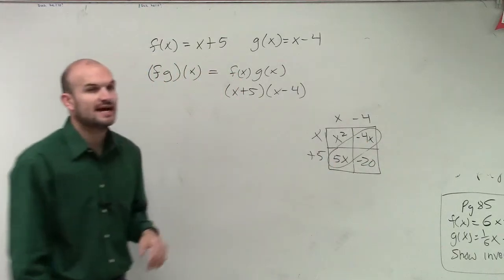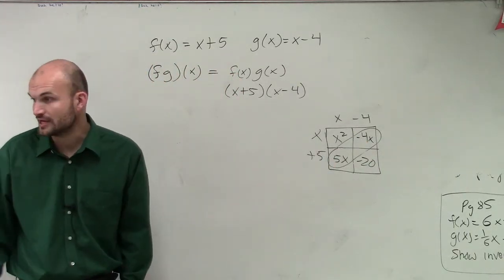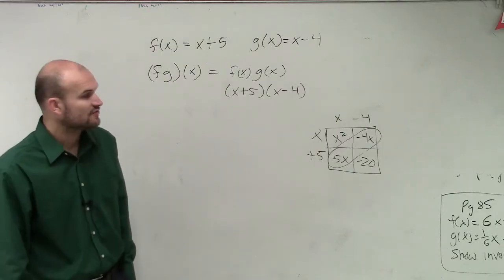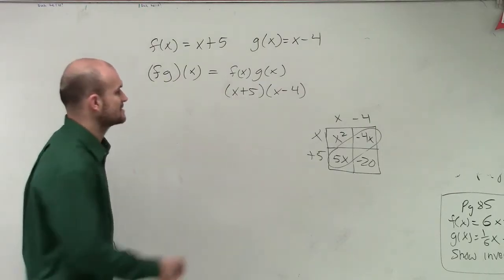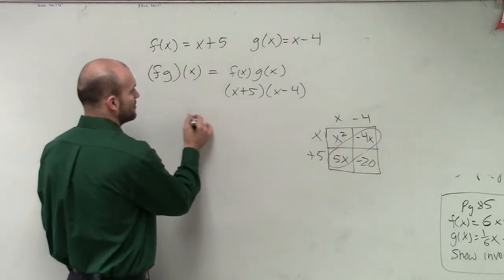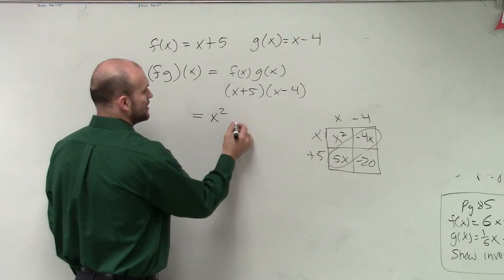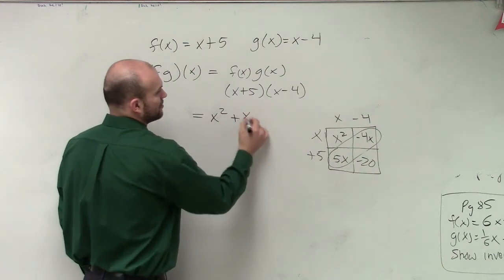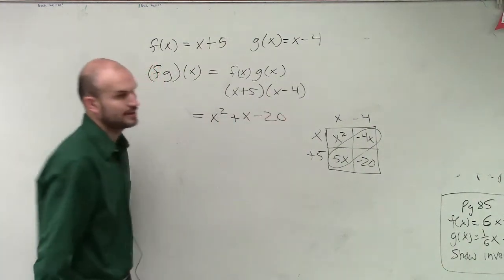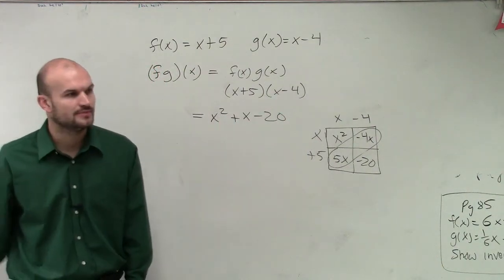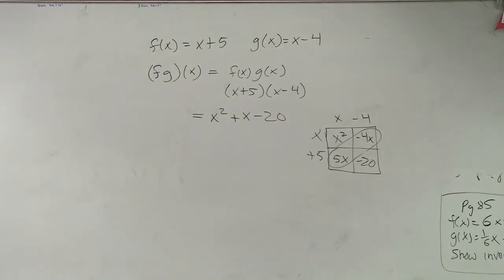We notice that our diagonal terms combine because they're like terms — 5x minus 4x is just x. So therefore, my final answer is going to be x squared plus x minus 20. Go ahead and grade that and see how you did.